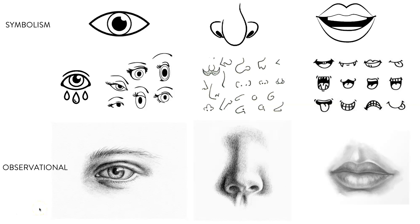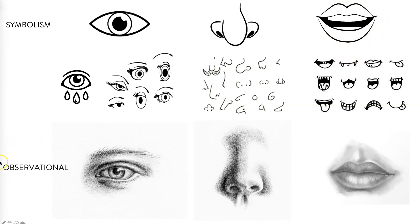Next we're looking at symbolism versus observational drawing. When we look at a portrait and specifically drawing a portrait, we often see things in symbols. For example, the eyes appear as a football shape symbolically, and the nose may be an L shape, maybe exaggerated nostrils, and the mouth may be a full kissy mouth or maybe a line. But we want to be looking at the portrait in an observational manner, meaning that we are looking at the individual characteristics of form.